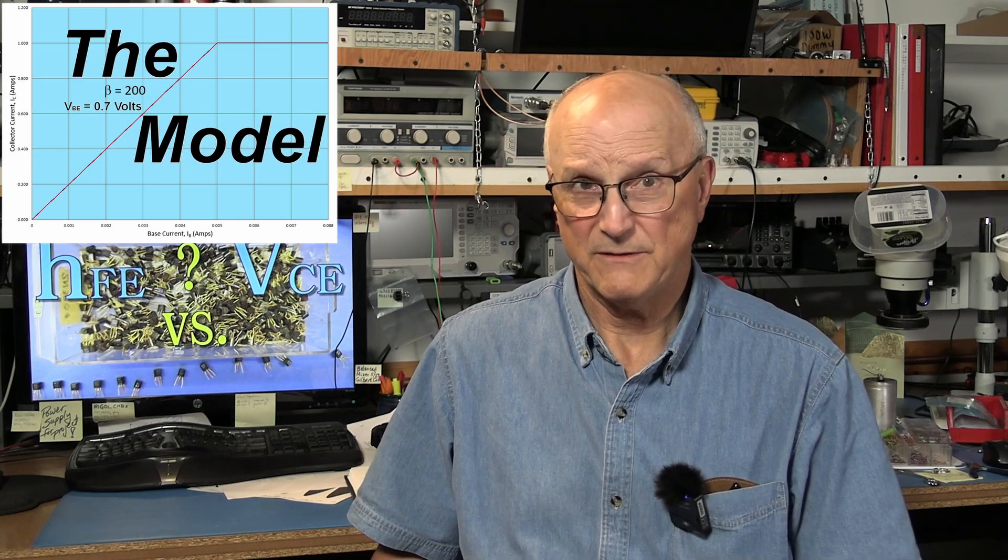However, this assumption breaks down when we start seeing large swings in the collector-emitter voltage with real-life BJTs. We have a problem because there is significant variation in HFE with large changes in collector-emitter voltage, or VCE. The purpose of this short video is to show you a bit about this phenomenon.